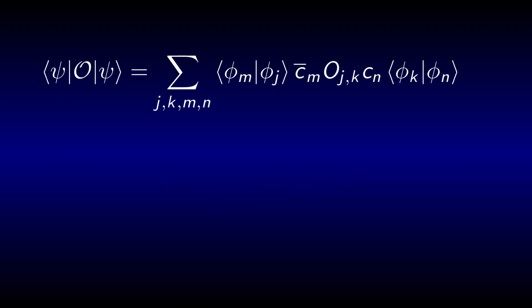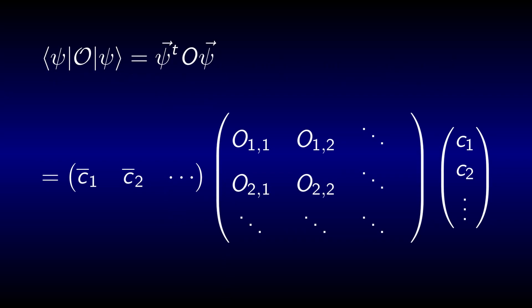The calculation of an expectation value can now be written in yet another form. Phi m projected on phi j and k on n kill one summation respectively, so that we are left with only two sums. Alternatively, this is just a matrix sandwich between two vectors. No wave function is left in the expression and no integral. It all boils down to linear algebra.